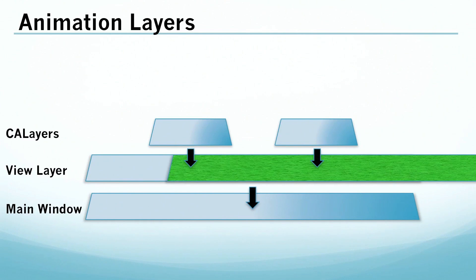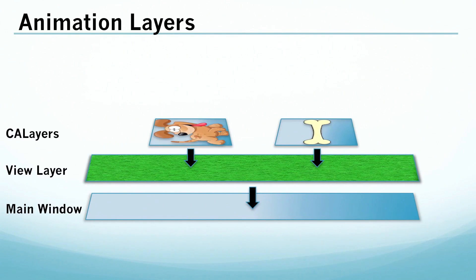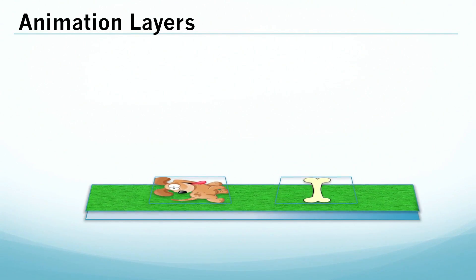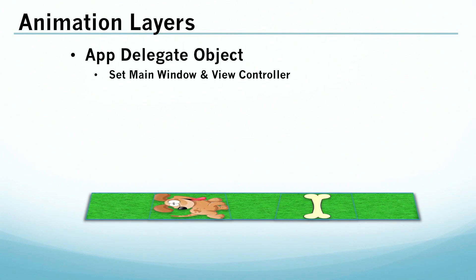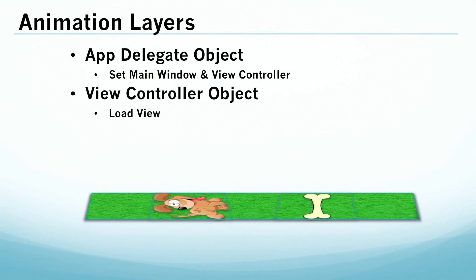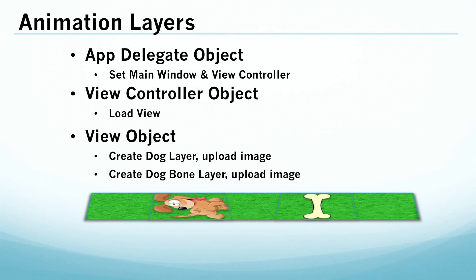Next, we'll load the image of the grass onto the view layer, and then the images of the dog and the bone onto the Core Animation layers. From a programming perspective, we'll do this with three objects: one, the app delegate, where we'll designate the main window for the app and also designate the view controller; two, the view controller object, which will basically just load the view; and three, the view object itself, which is where we'll create the Core Animation layers that will house the dog and the bone images. Since this is just a single view app, the app delegate and the view controller really won't do much — these objects become more important when you're working with multiple views.